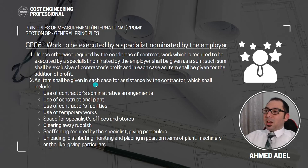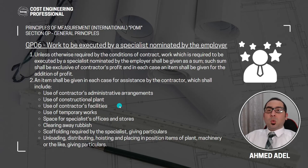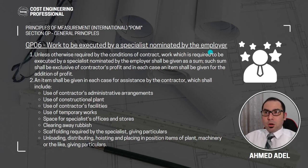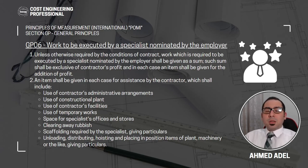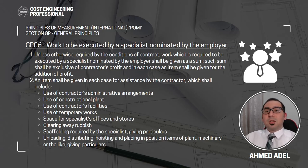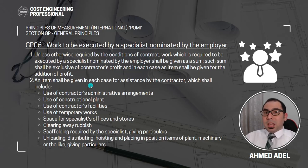An item shall be given in each case for assistance by the contractor. In case some work is to be executed by someone nominated by the employer, we have to keep one item for these works and another item alongside it. You have seen provisional sums in BOQs — they keep the provisional sum in one line item and add another item for contractor attendance, overheads, and profit. We keep one item for the work to be executed by a specialist and another item for the assistance required by the contractor.